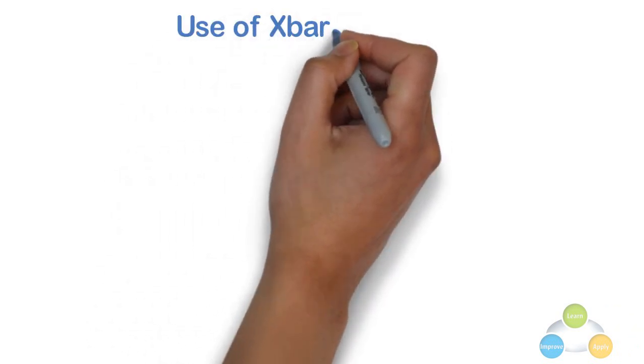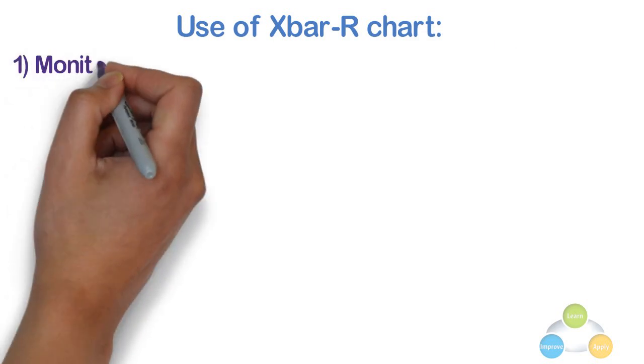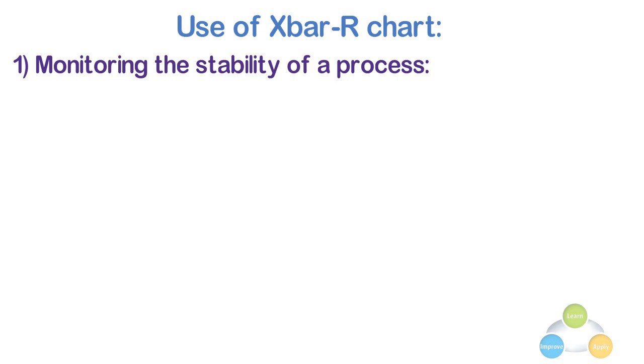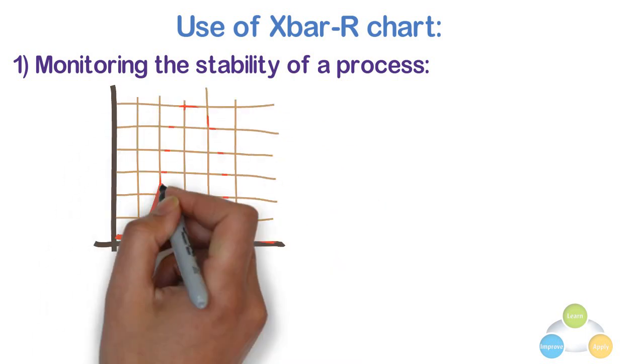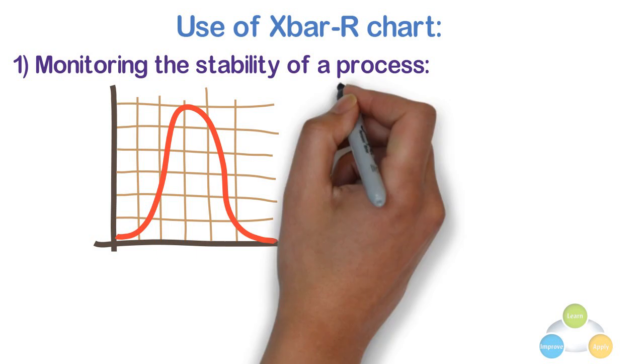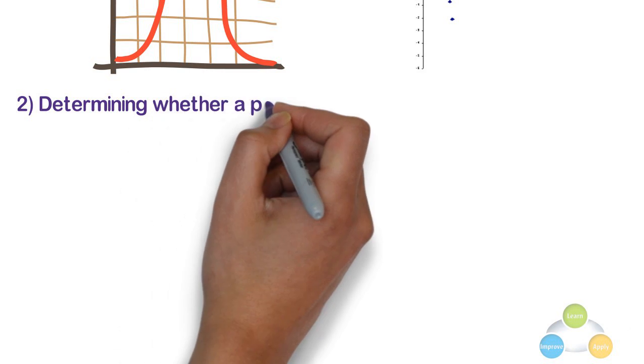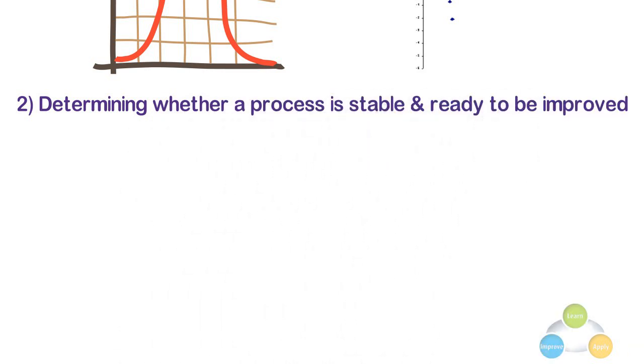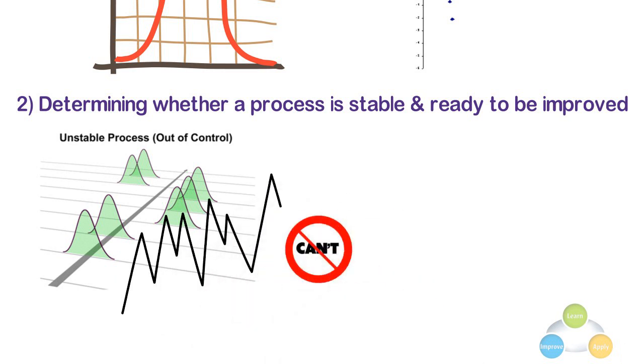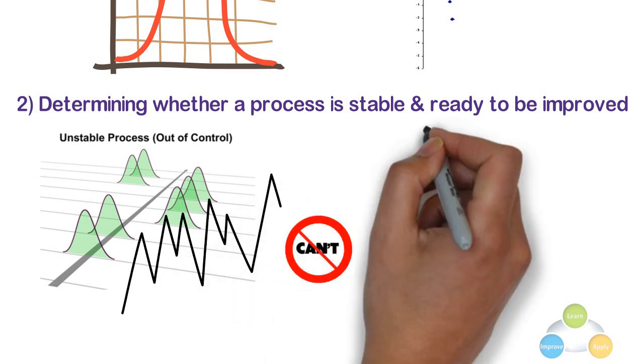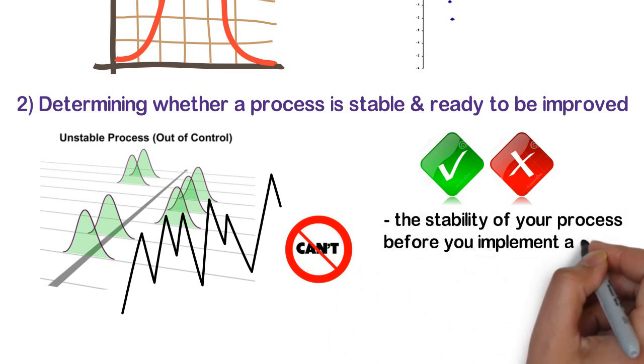Like all control charts, X bar R chart also has 3 main uses. 1. Monitoring the stability of a process. Even very stable processes have some variation, and when you try to fix minor fluctuations in a process, you can actually cause instability. 2. Determining whether a process is stable and ready to be improved. When you change an unstable process, you can't accurately assess the effect of the changes.